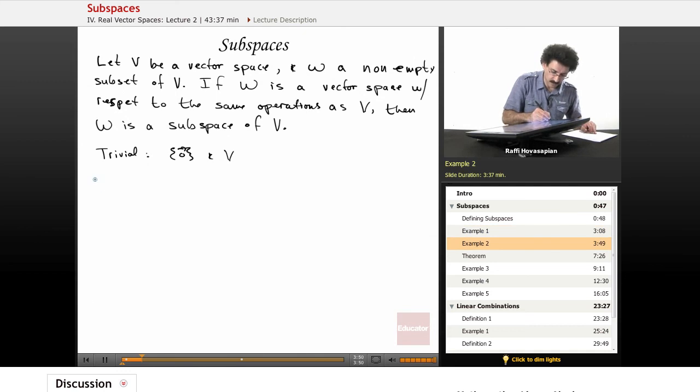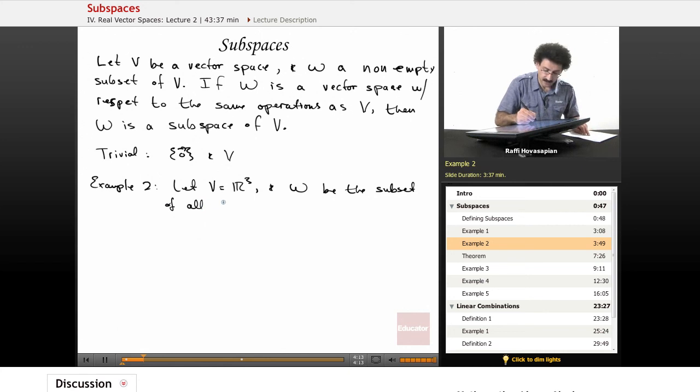The second example. Example 2. We'll let V equal R³, and W be the subset of all vectors of the form (a, b, 0).